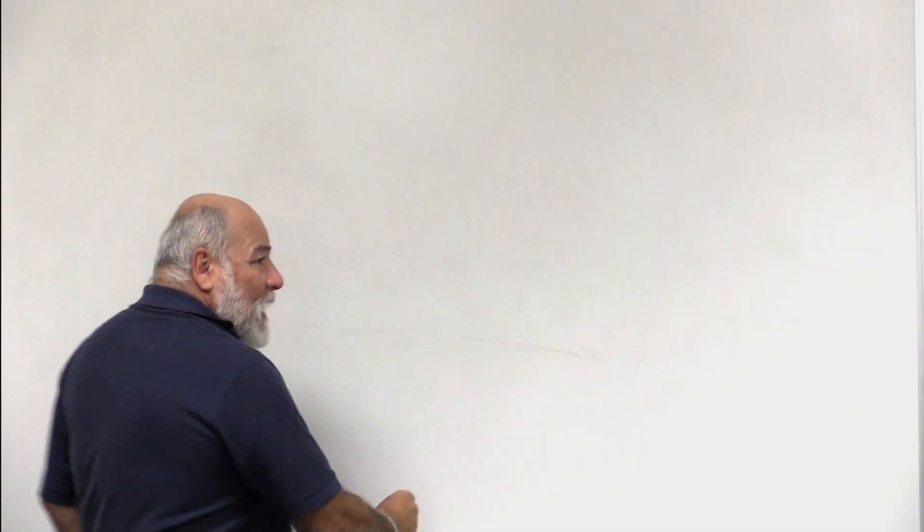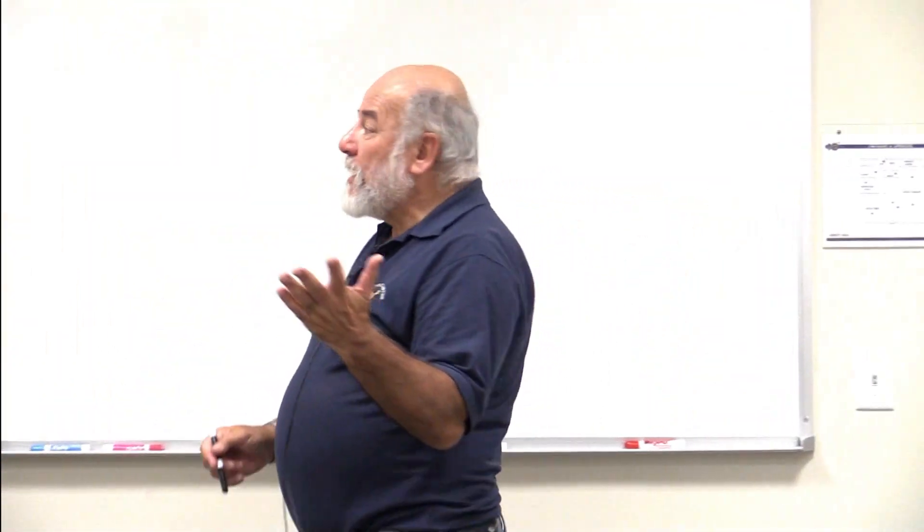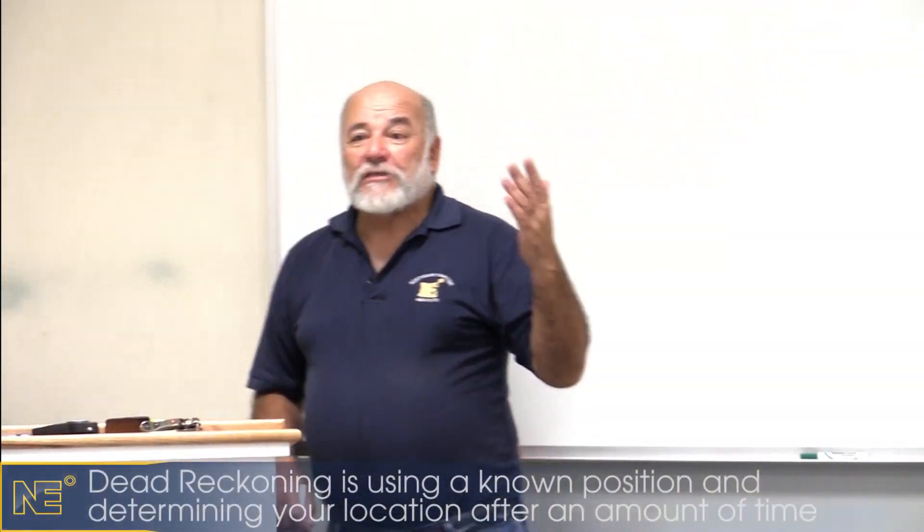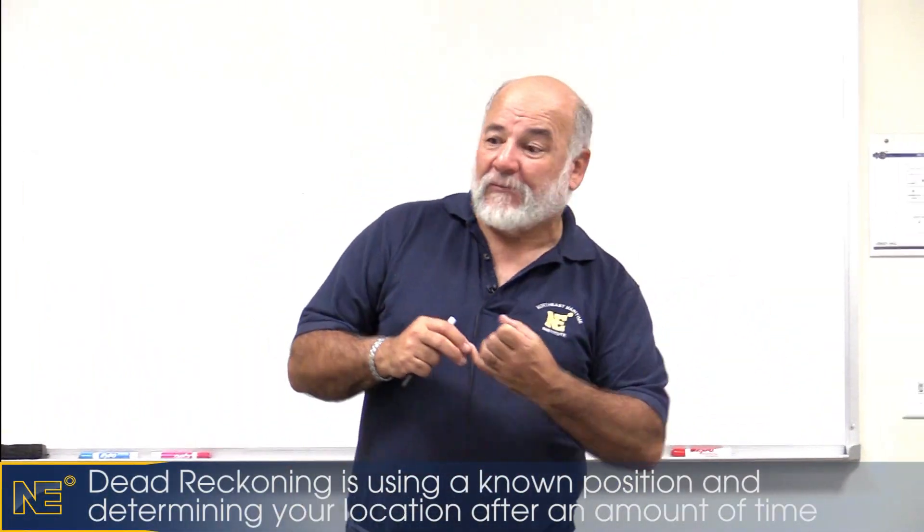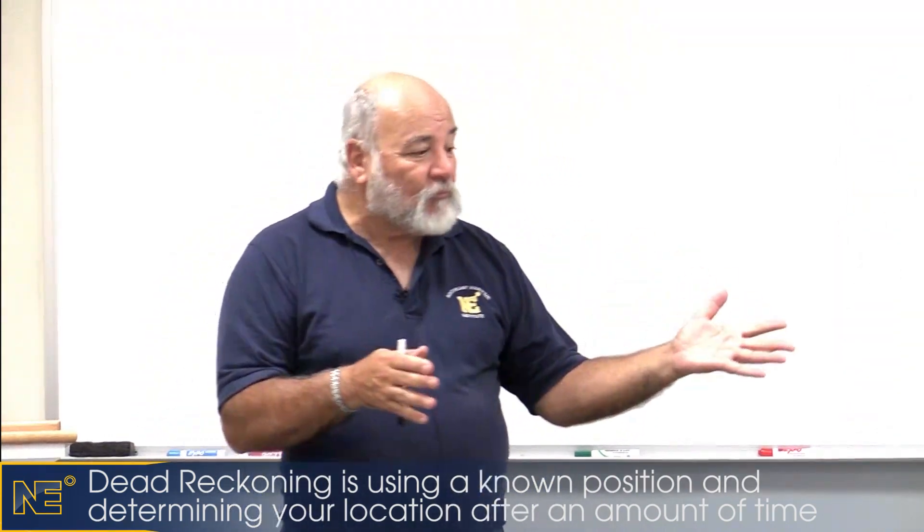Alright, so we're going to talk about dead reckoning. We're going to start somewhere. Where do we start? We always start with a known position. How do we figure out that known position? In Coast Guard exam terms and practice terms, we're going to give you a position. It's either going to be a lat/long position, you're going to get it with cross bearings, radar bearings—somewhere they're going to give you a known position.